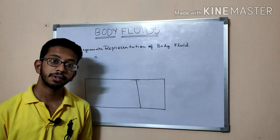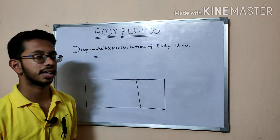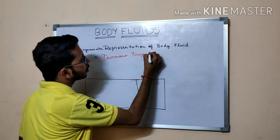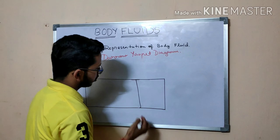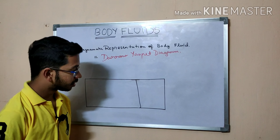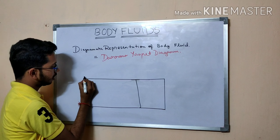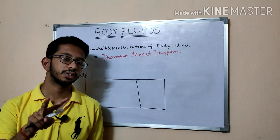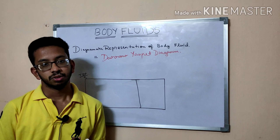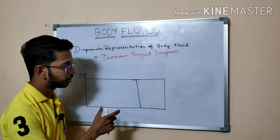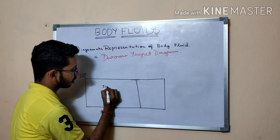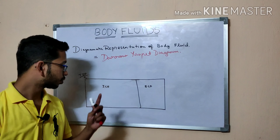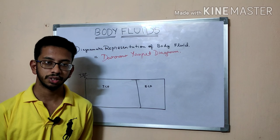Now we'll look at the diagrammatic representation of body fluids using a Daroyana diagram. The complete rectangle represents the total body fluid. It is divided into two parts: intracellular fluid and extracellular fluid. The larger rectangle is intracellular fluid because it is two-thirds of the total body fluid, and the smaller one is extracellular fluid.